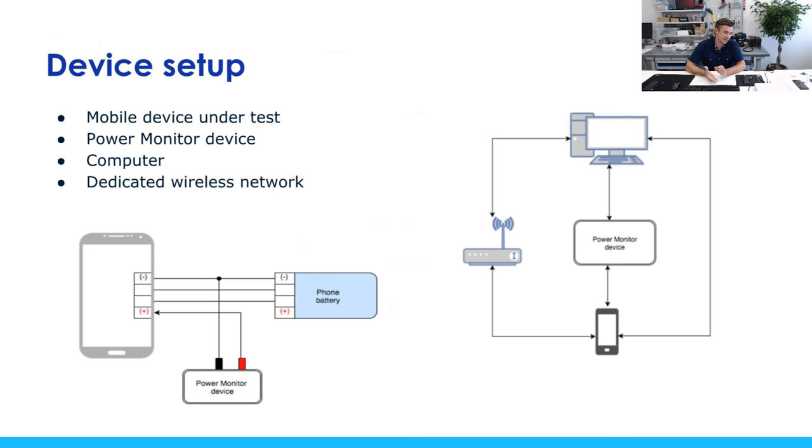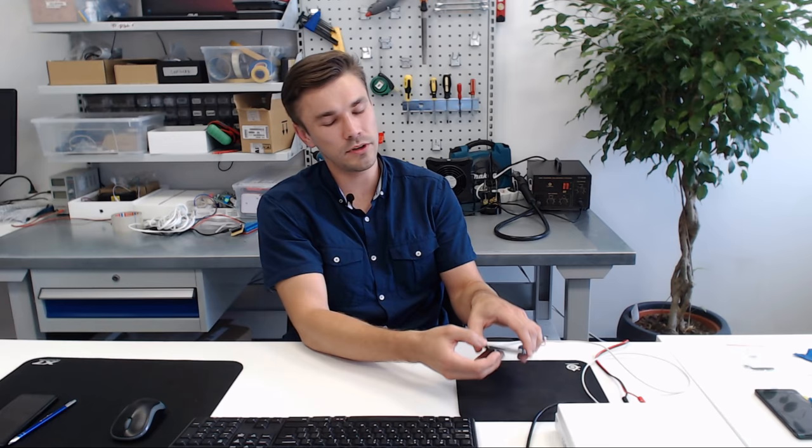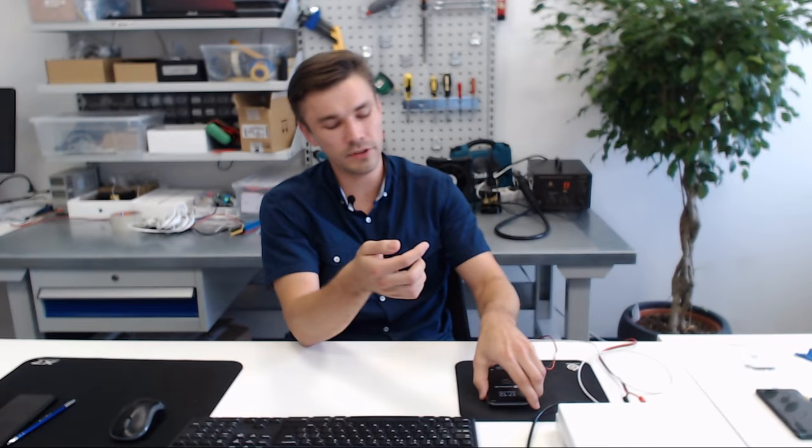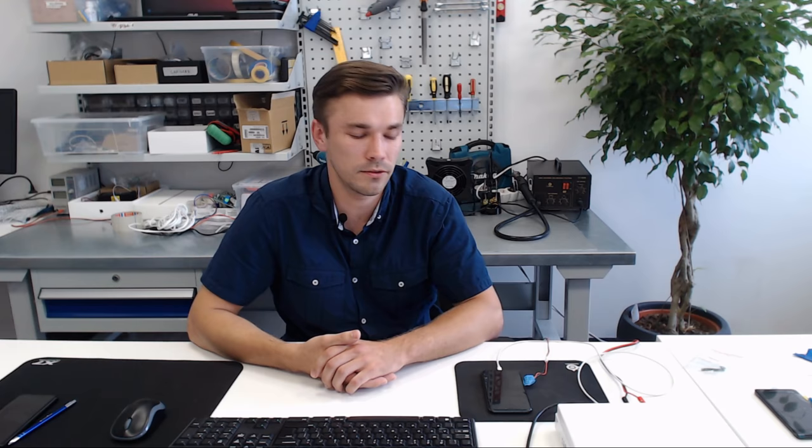Since we want to measure battery consumption, the device needs to be in a discharge state — it cannot be charging while we test. To achieve this, the power monitor allows us to also attach a USB connection, which is automatically disconnected during the test and reconnected after. This allows us not only to charge the device a bit after the test but also to run additional automation scripts that require a computer connected to the smartphone.